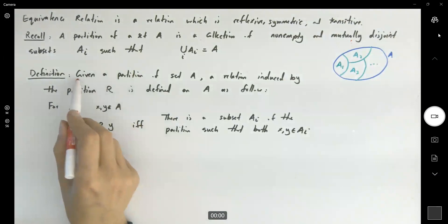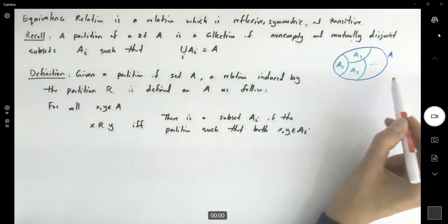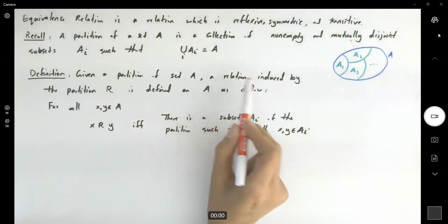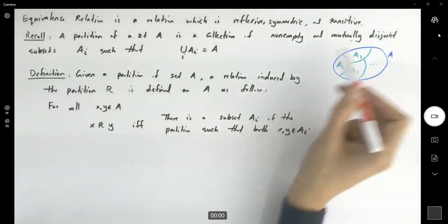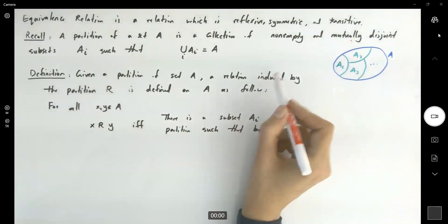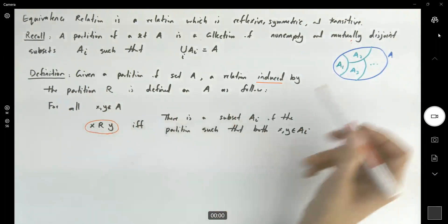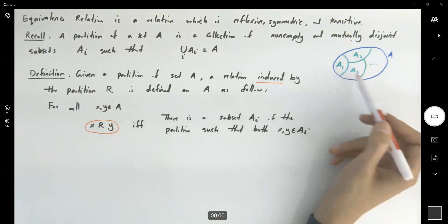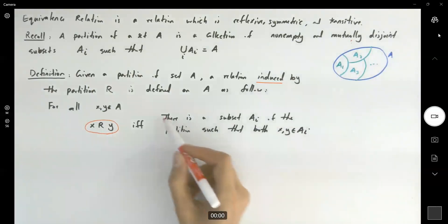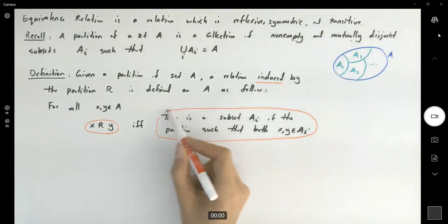So given a partition for set A, a relation can be induced by this partition. We're going to call this relation R and we're going to define this relation as follows. We say that x and y are related together if and only if you have a subset, a sub 1, a sub 2, a sub 3, one of them, such that both x and y are members of this exact partition.